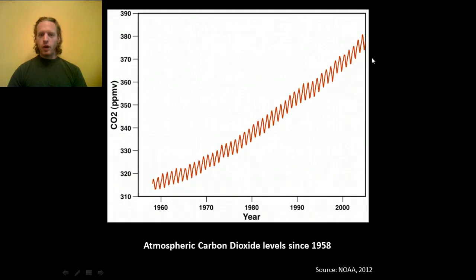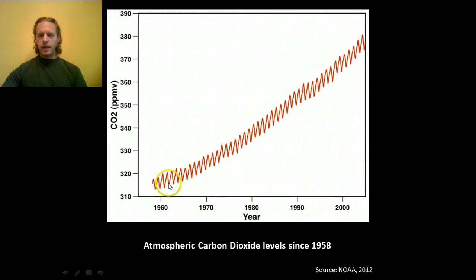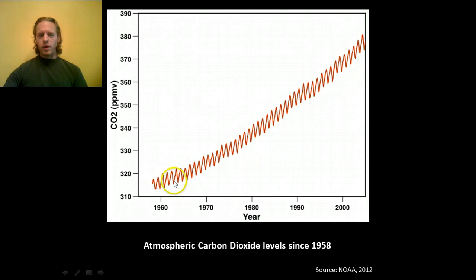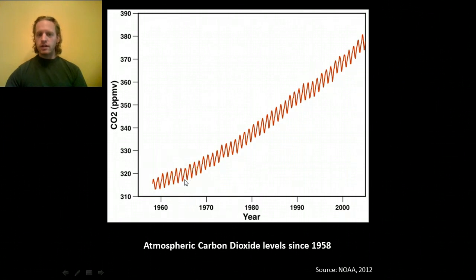Exhibit B. If we zoom in on the last about 30 or 40 years, this is what we see. First of all, there is a general trend upward, and we'll get to that in a second. But second, it's a zigzag plot. It goes up and down, up and down. What we're actually seeing is that every six months it goes up, and every six months it starts falling down again. What we're actually seeing here is the seasonal changes.